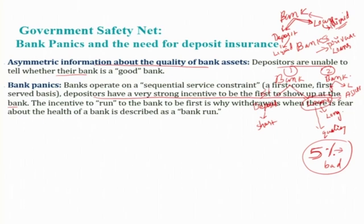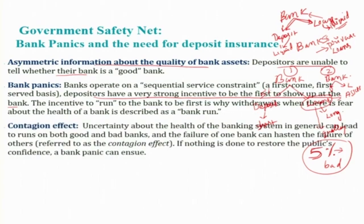Because of this fear, everyone approaches the bank. There will be some vault cash, some reserves with the central bank, and some loan repayments coming in — but that is all. This is a kind of contagion effect: uncertainty about the health of the banking system in general can lead to runs on both good and bad banks. Initially the problem is with bad banks, but depositors cannot distinguish good from bad, so they start running to good banks as well.